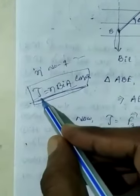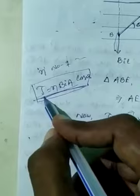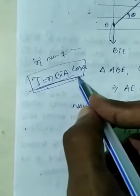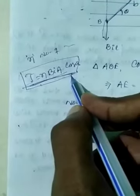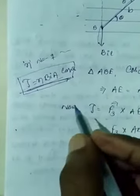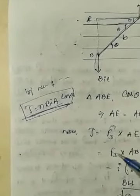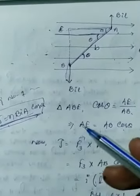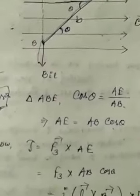The torque TAU is maximum when theta equal to 0, because cos 0 is equal to 1. The magnitude of torque TAU is 0 when theta equal to 90 degrees, because cos 90 equals 0. The net force on a current loop due to a uniform magnetic field is 0, but the torque on the current loop may or may not be 0. The net force is 0 because one force is positive and another is negative with equal magnitude. The torque acting on a current loop placed in a uniform magnetic field is independent of the shape of the loop. This is all about the torque on a current loop in a uniform magnetic field. Thank you.